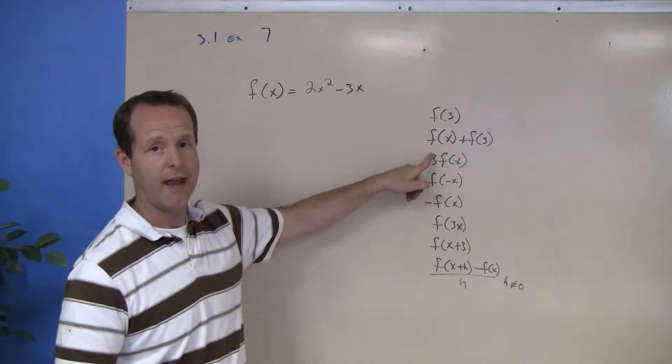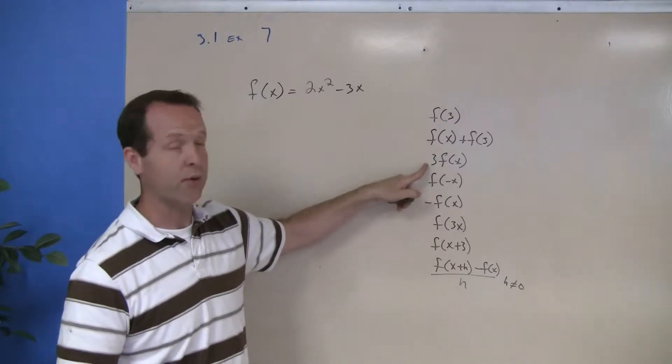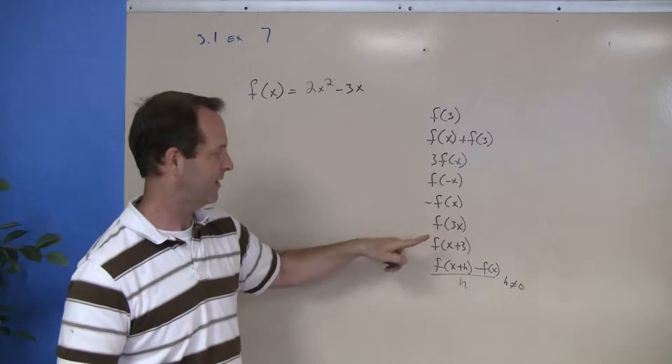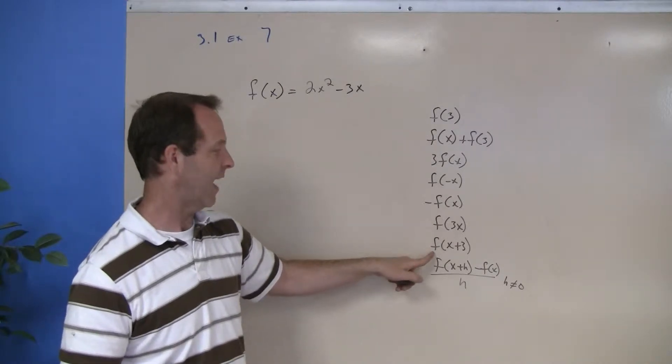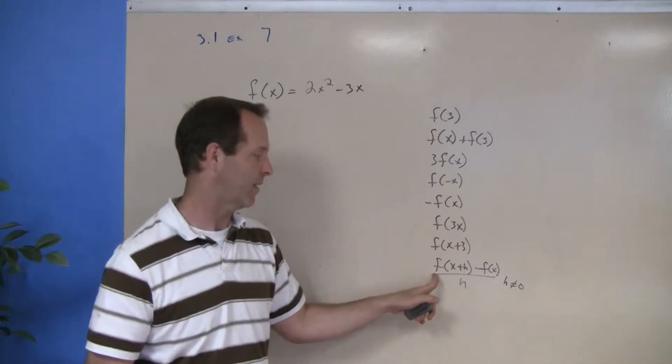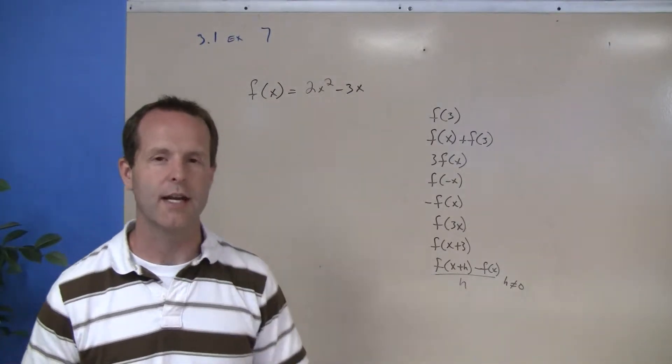f(3), f(x) plus f(3), 3f(x), f(negative x), negative f(x), f(3x), f(x plus 3), and f(x plus h) minus f(x) all over h, so I mean h does not equal 0.